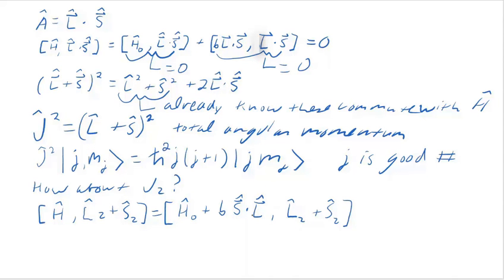L sub Z does not commute with S dot L because S dot L has L sub X and L sub Y in it. Same for S sub Z. S sub Z does not commute with S dot L because S dot L has S sub X and S sub Y in it.